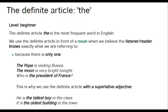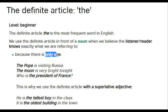The definite article 'the'. The definite article 'the' is the most frequent word used in English. We use the definite article in front of a noun when we believe the listener or the reader knows exactly what we are referring to. The first point is because there is only one — we already know that something is just one all over the world or in our surroundings, so we will use 'the' before it.